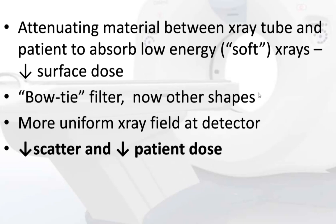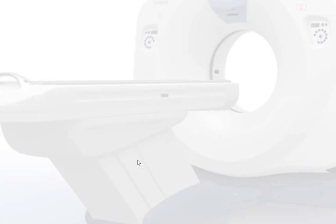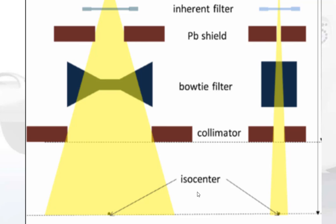Filter is another important concept when discussing CT dose. It is attenuating material between the X-ray tube and patient to absorb low energy or soft X-rays, and it decreases surface dose. There are different shapes of filters — one of the most common is called the bowtie filter. It creates a more uniform X-ray field at the detector, decreases scatter, and decreases patient dose.